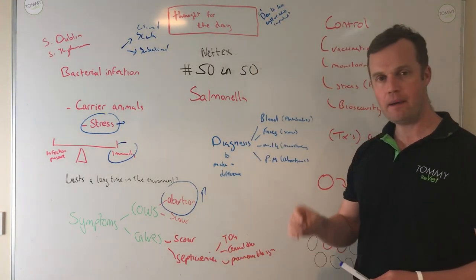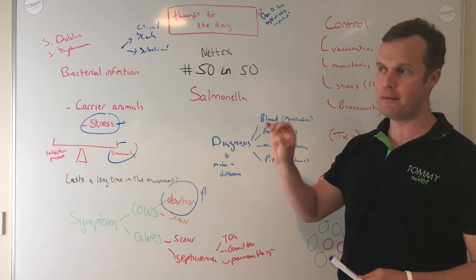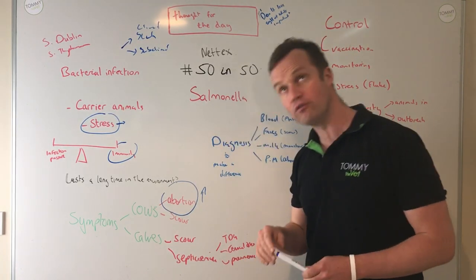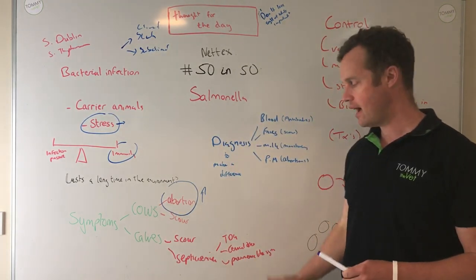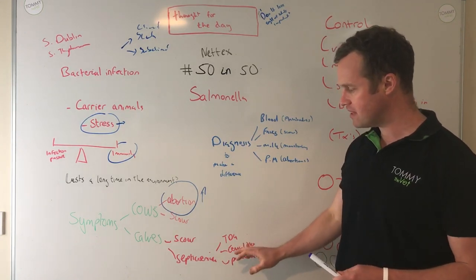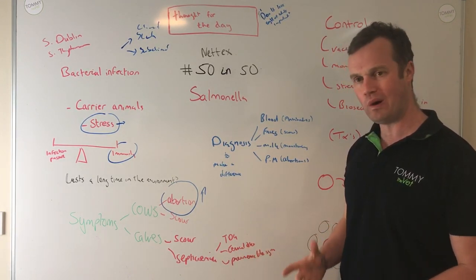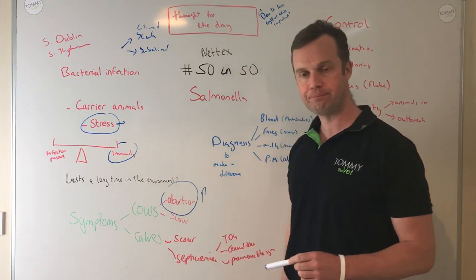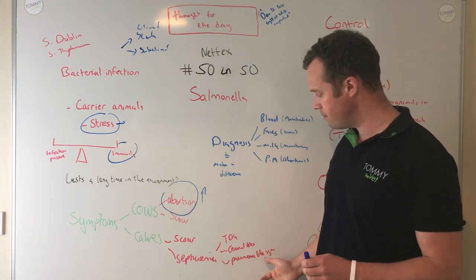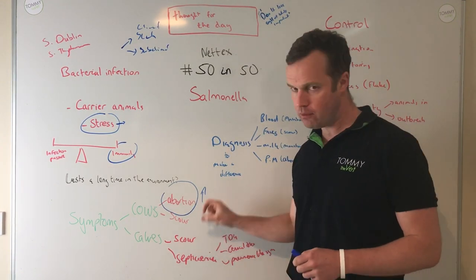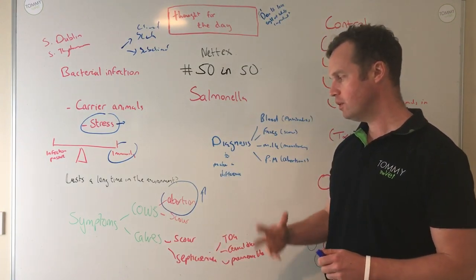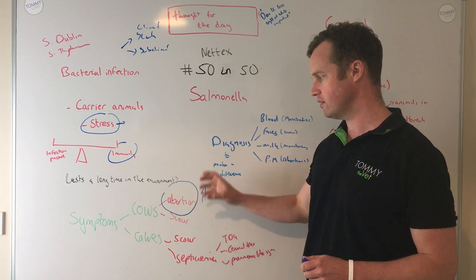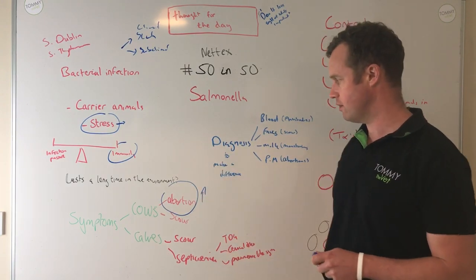There is also cervical osteomyelitis, where the Salmonella bug goes into the cervical vertebrae at the neck, and you can get calves showing very unusual symptoms like collapse. With Salmonella you can also get what might look like pneumonia symptoms with the septicaemia, and it can still be Salmonella. So it can play a number of roles in calves — we typically associate it with bloody scours, but it can also cause scours in cows and abortions.